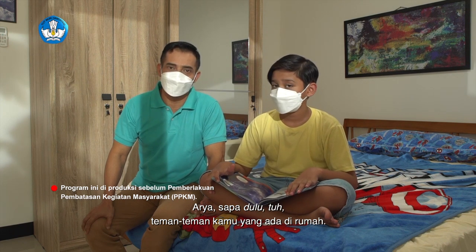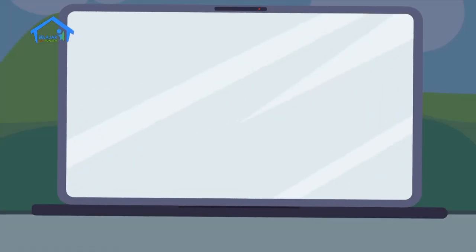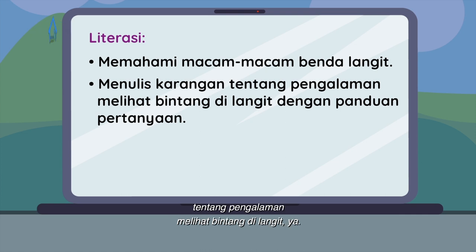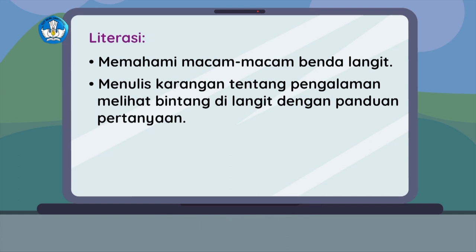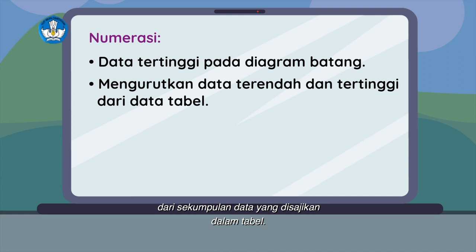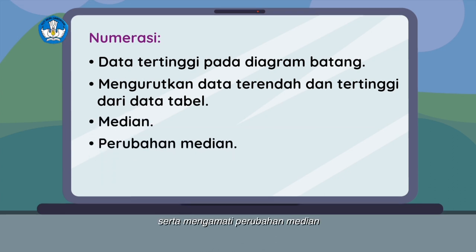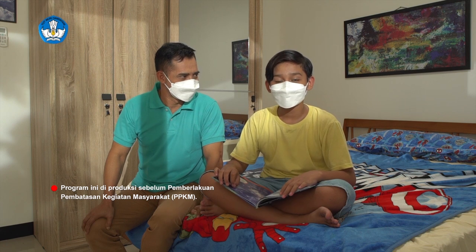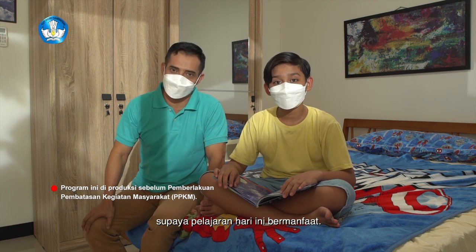Arya, siapa dulu tuh teman-teman kamu yang ada di rumah? Halo teman-teman! Hari ini kita akan belajar tentang benda-benda langit. Kita nanti bikin karangan tentang pengalaman melihat bintang di langit ya. Juga, kita akan melengkapi paragraf dengan kata yang tepat. Di numerasi, kita akan menentukan data tertinggi pada diagram batang, mengurutkan data terendah dan tertinggi dari sekumpulan data yang disajikan dalam tabel. Kita juga akan mencoba memahami konsep median, serta mengamati perubahan median jika ada data yang diubah. Siapin dulu buku dan peralatan tulis kalian ya, dan jangan lupa berdoa sebelum belajar supaya pelajaran hari ini bermanfaat.